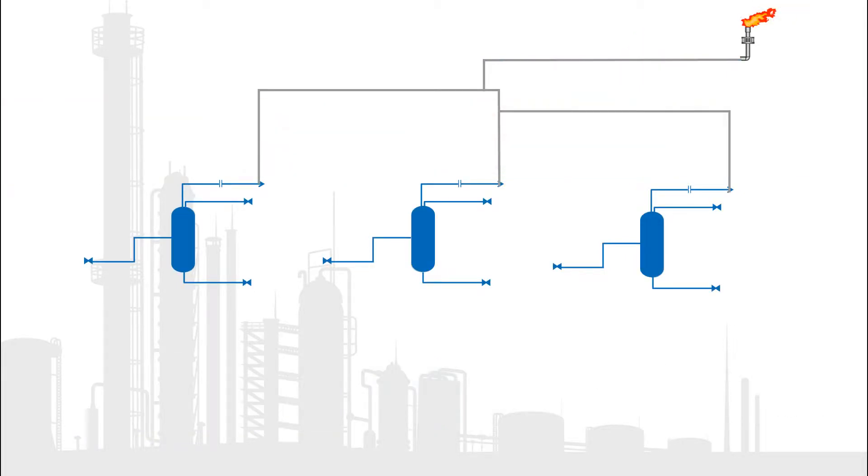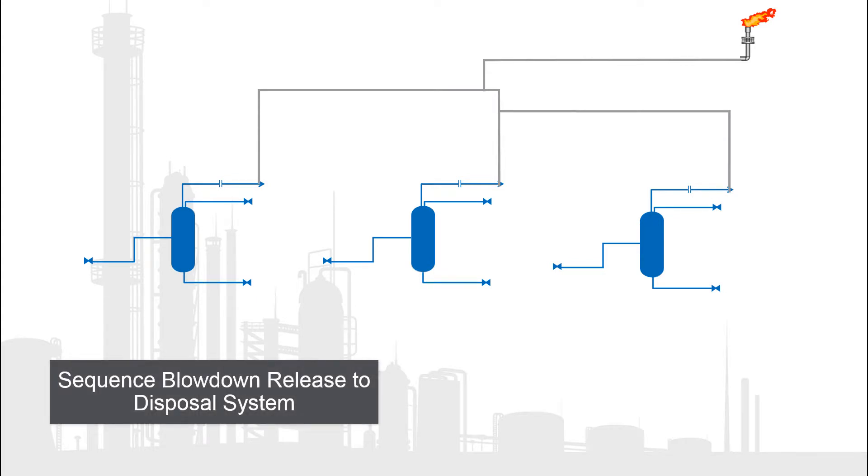A staggered blowdown system, where blowdown valves are opened in a predetermined sequence, is an excellent way to keep the peak flow at the flare header below the threshold while still discharging in the required time.